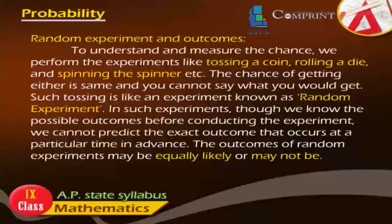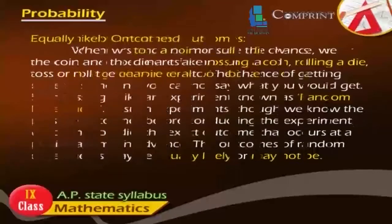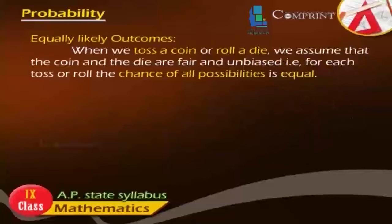In such experiments, though we know the possible outcomes before conducting the experiment, we cannot predict the exact outcome that occurs at a particular time in advance. The outcomes of random experiments may be equally likely or may not be. Equally likely outcomes: When we toss a coin or roll a die, we assume that the coin and the die are fair and unbiased. That is, for each toss or roll, the chance of all possibilities are equal.